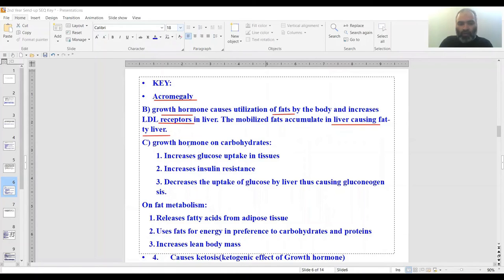C is effect of growth hormone on carbohydrates and on fat. This is pretty straightforward. Let me just quickly go through it. On carbohydrates, it increases glucose uptake in tissues, increases insulin resistance, decreases uptake of glucose by liver, and so on. In fact, you can see release of fats from adipose tissue, uses fats for energy in preference to carbohydrates and proteins, increases lean body mass, and causes a ketogenic effect, which is a hallmark of growth hormone.